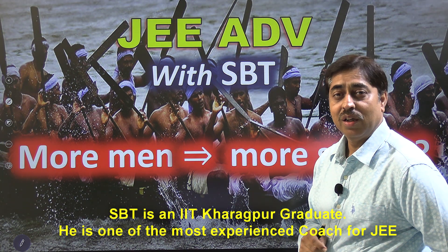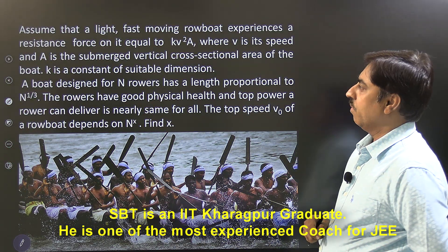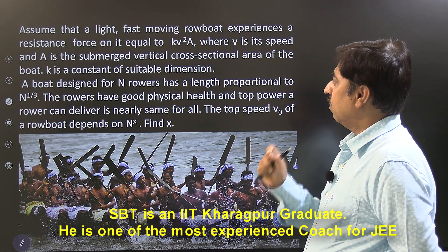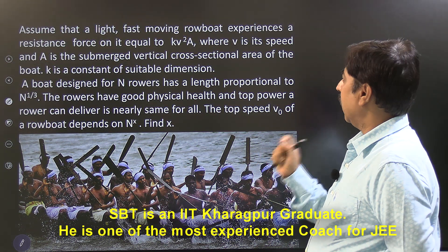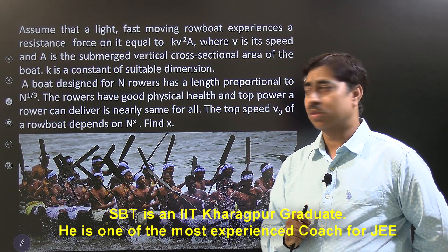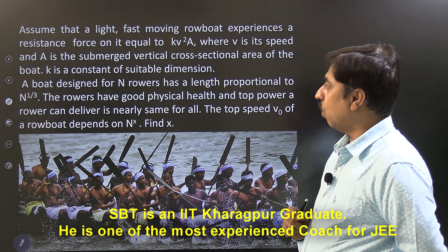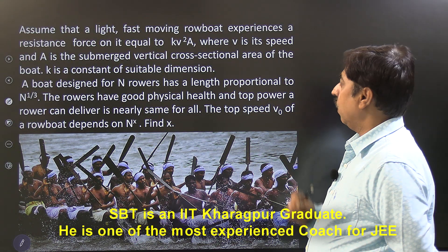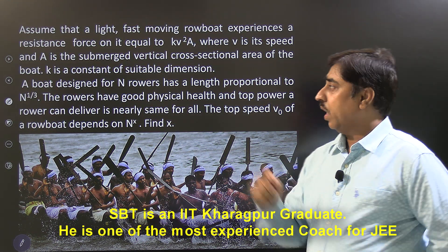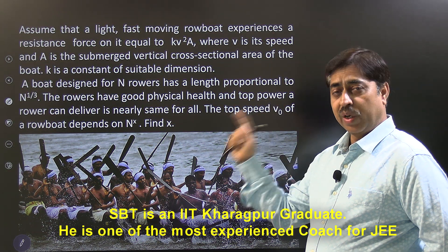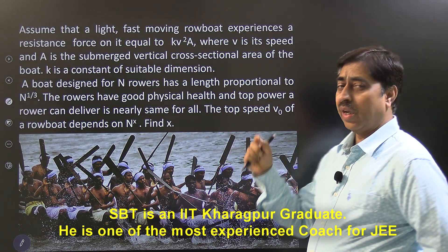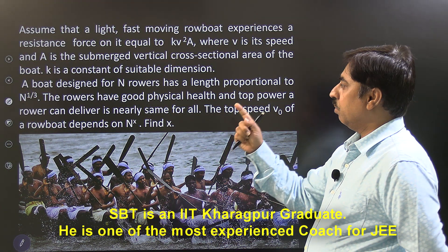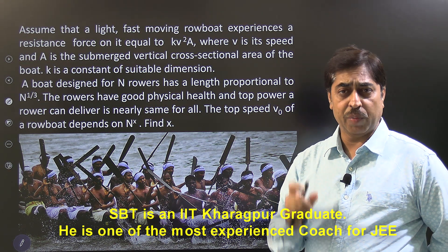Let us first read the statement of the problem. Assume that a light fast-moving rowboat experiences a resistance force equal to k·v²·A, where v is the speed of the boat and A is the submerged vertical cross-sectional area of the boat. K is a constant of suitable dimension.